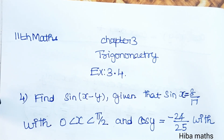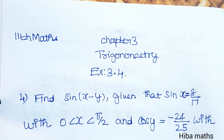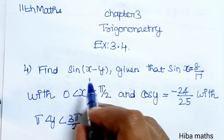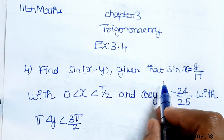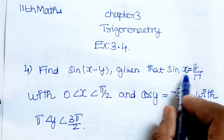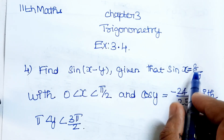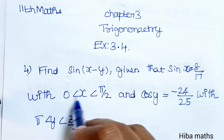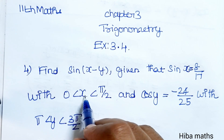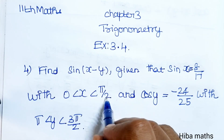Hello students, welcome to Hibamax 11th standard, Chapter 3 Trigonometry, Exercise 3.4, fourth question. Find sin(x - y), given that sin x is equal to 8 by 17, with x is greater than 0 and less than pi by 2.